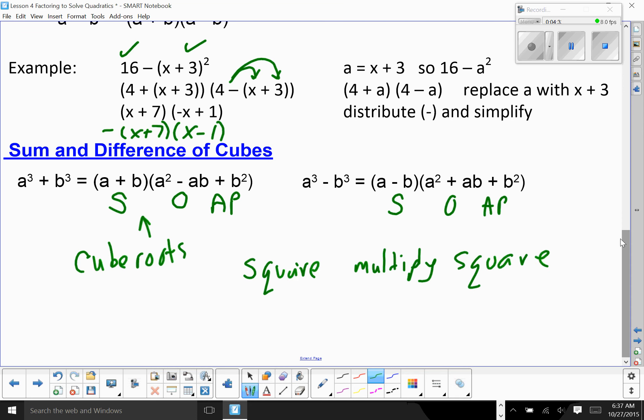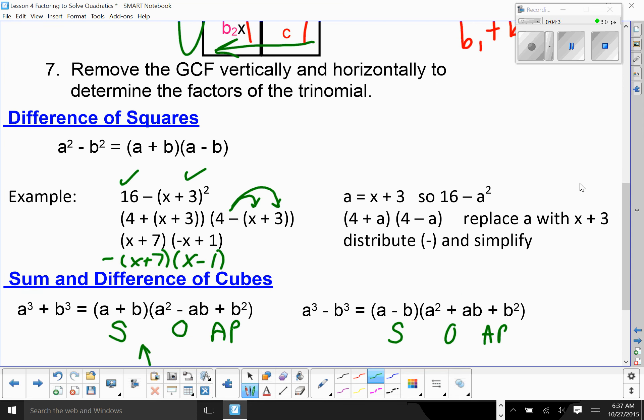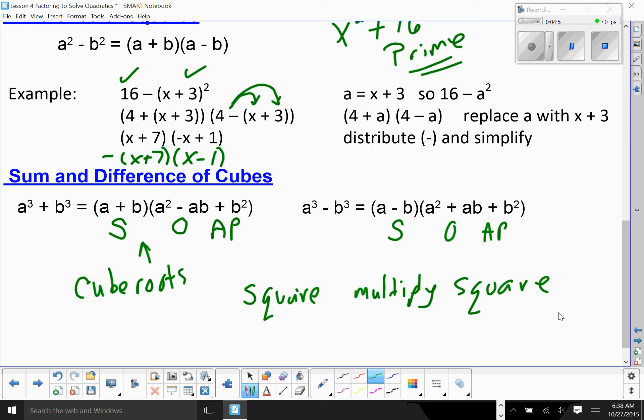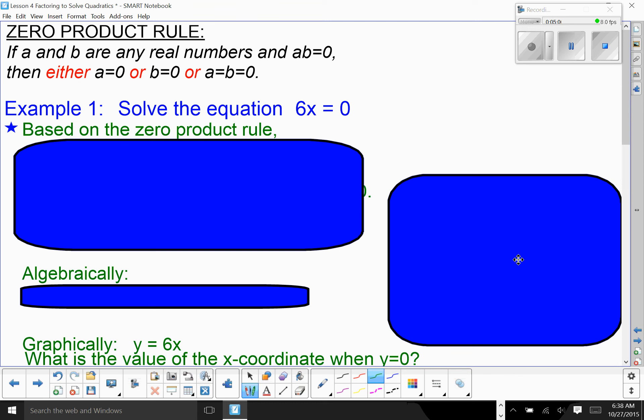One thing about the difference of squares. If you have X squared plus 16, that's prime. You cannot factor a sum of squares unless it's got a common factor. If you want more examples of factoring, go to the factoring folder and watch whichever type of factoring you need.